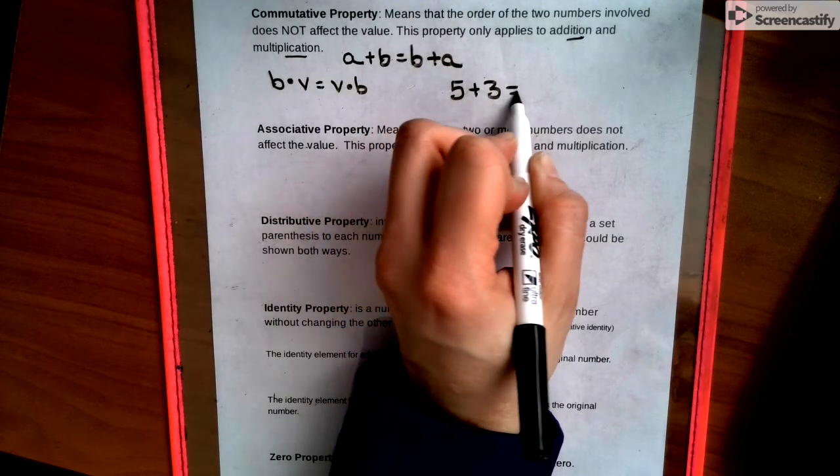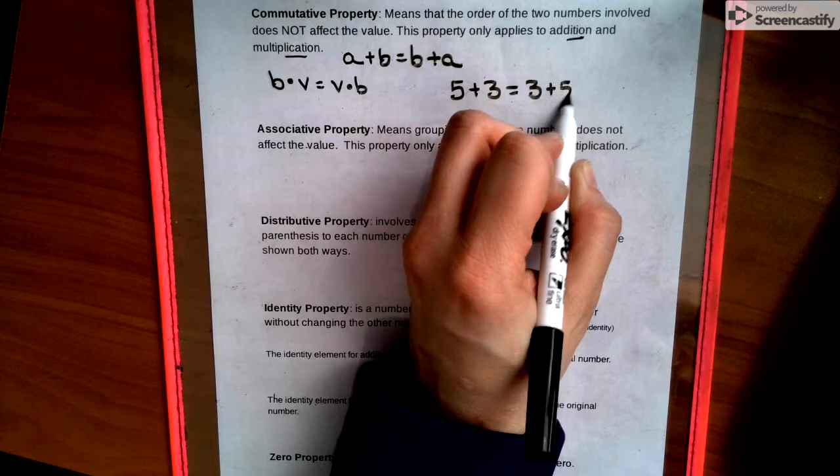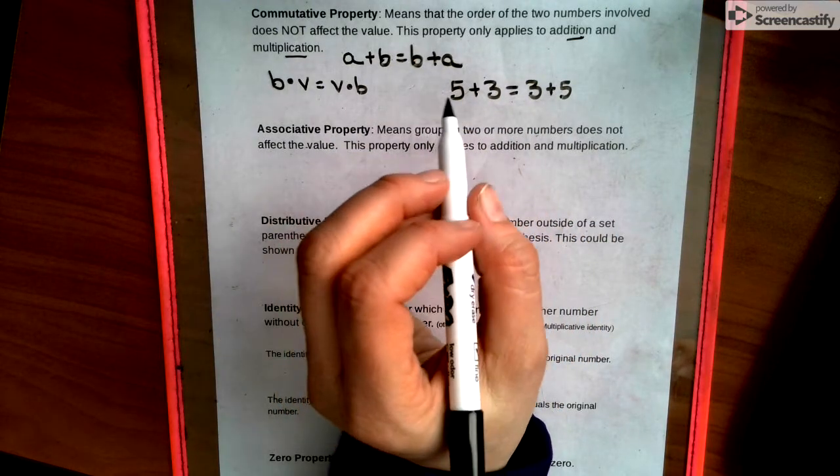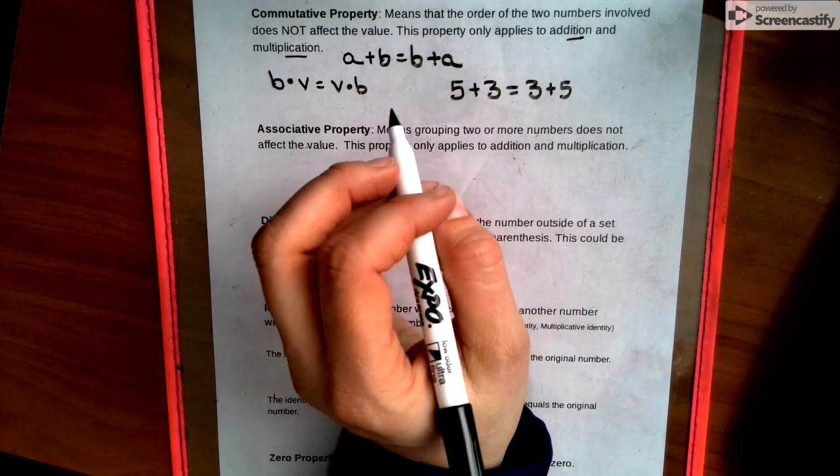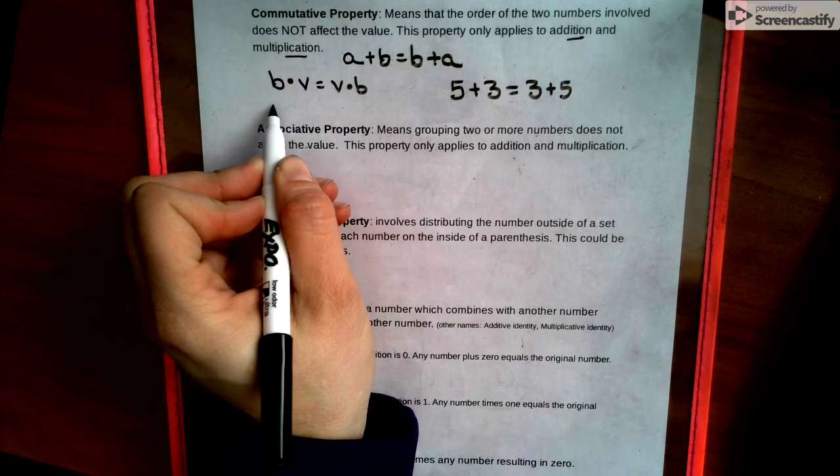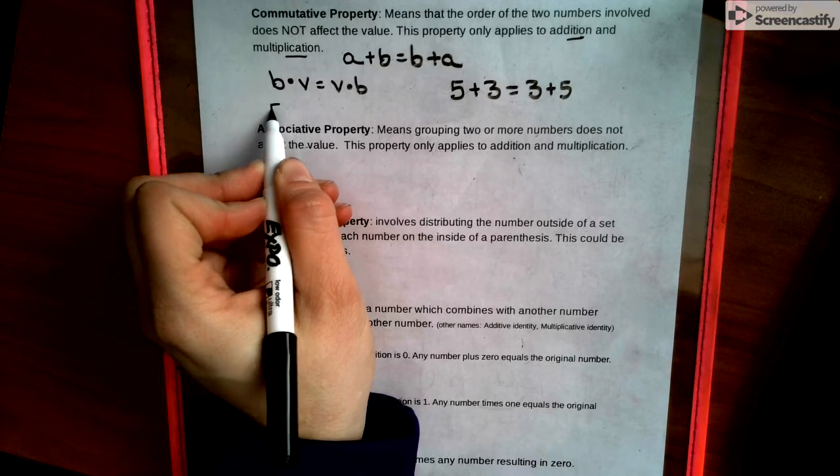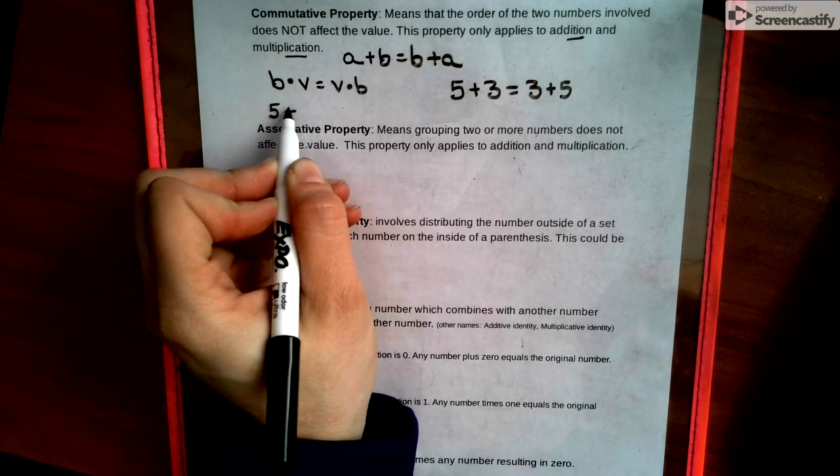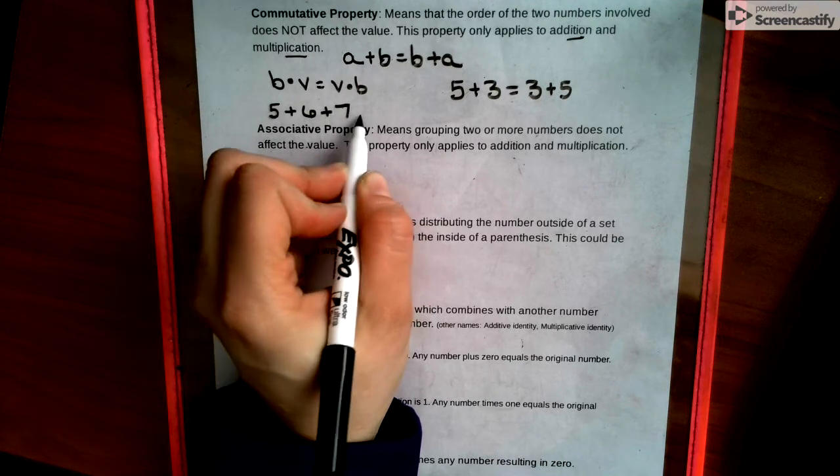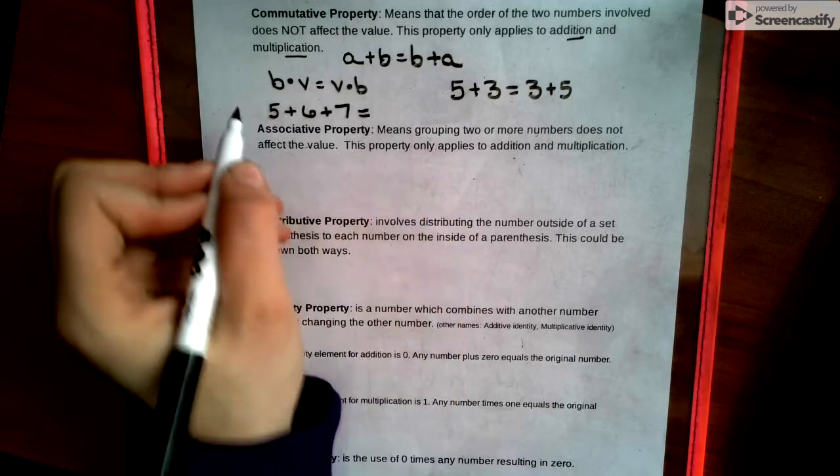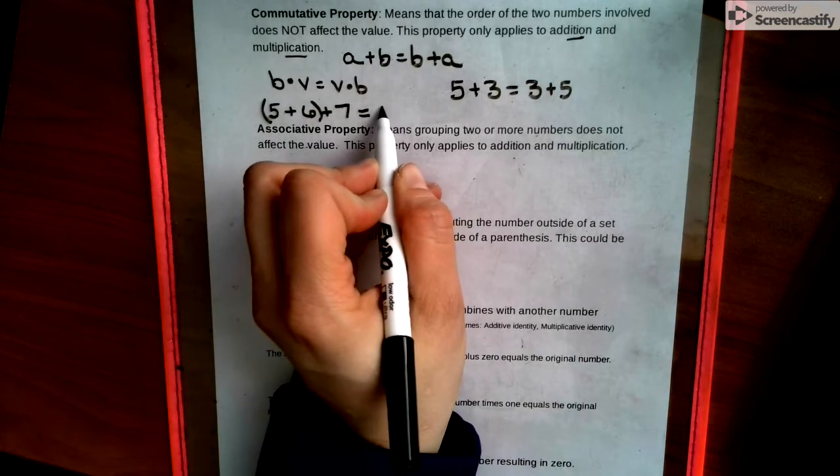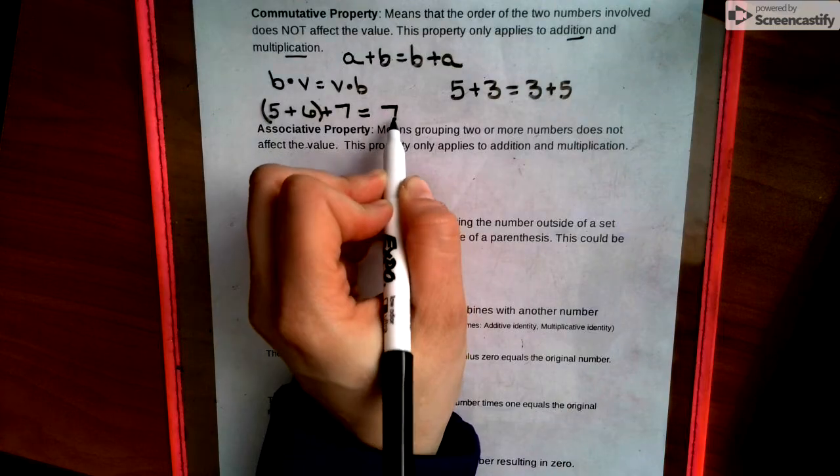five plus three equals three plus five. These are all examples of commutative property. Now sometimes we get a little sneaky with commutative property and we could do something like this where we have five plus six plus seven equals and then they put parentheses around these and then they do this like seven